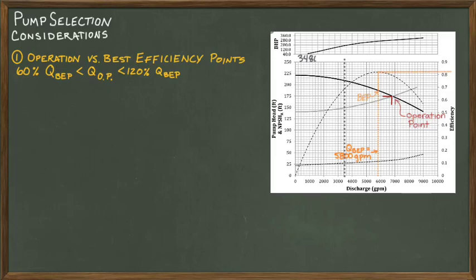So the operating point should be between 3480 gallons per minute and 6960 gallons per minute. In this example, our operating point is at 6800 gallons per minute, so we are good with this parameter.